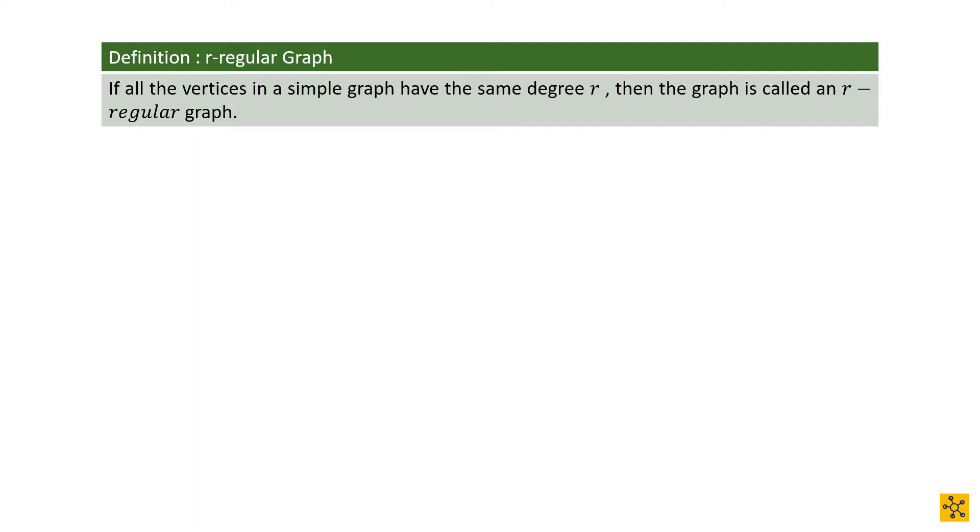Next up, we have an R-regular graph. An R-regular graph is just a very specific kind of graph where the degree of every vertex is the same. So you have a situation with V1, V2, V3, and V4. We can have a one regular graph. In a one regular graph, every vertex has a degree of one.